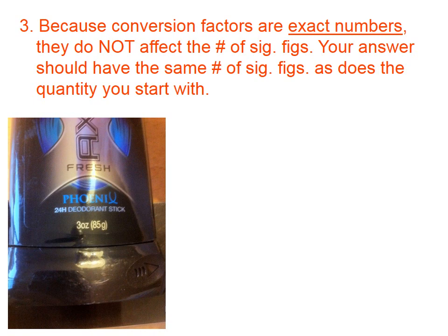And some negative examples of this can be found in any consumer product. This is a picture of some deodorant, and if you look at what's in this yellow box, three ounces has one sig fig, 85 grams has two, and if this had been done properly, they would have the same number of significant figures. So, what's in this yellow box is wrong.